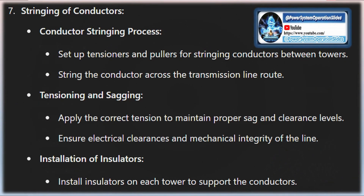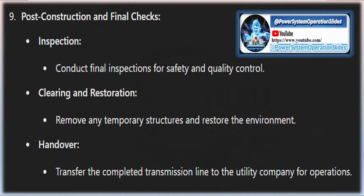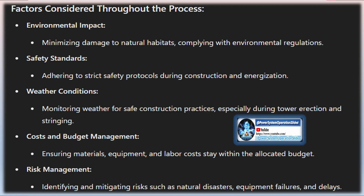Land required for agricultural use or other economically important activities should also be avoided where possible to prevent conflicts with local stakeholders. Another critical component before finalizing the route is ensuring that the transmission line is compliant with regulatory frameworks. Local, regional, and national authorities typically impose strict regulations regarding land use, environmental protection, and infrastructure development.